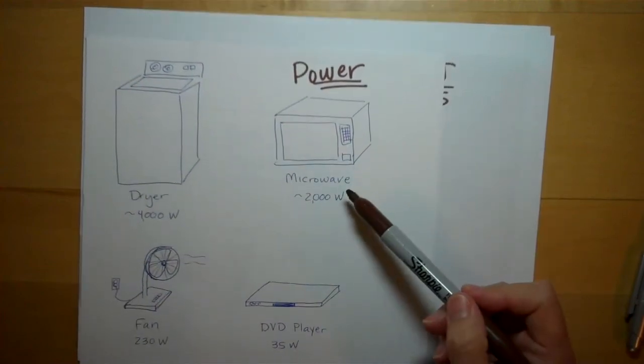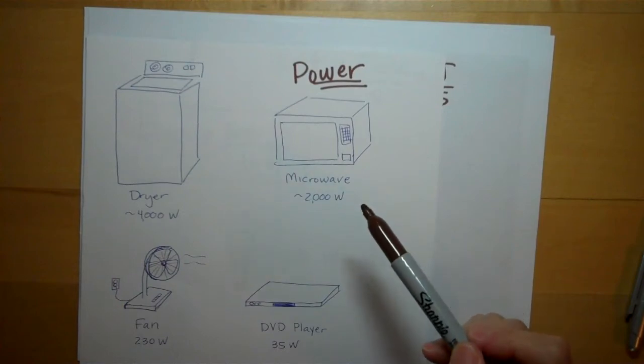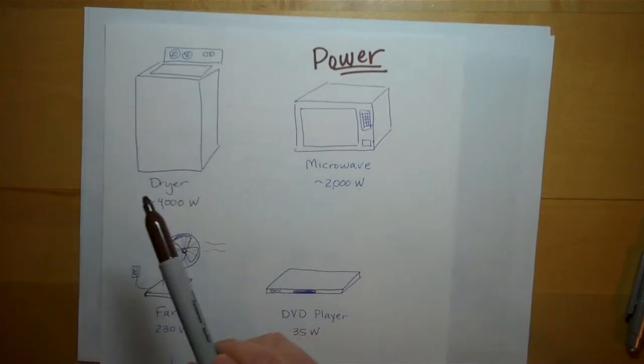A microwave, a big microwave running on high can use as much as 2,000 watts of power. And a dryer, which is one of the biggest consumers of power in the house.